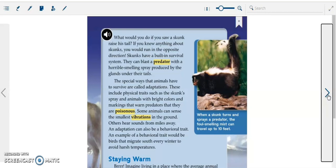These include physical traits such as the skunks' spray and animals with bright colors and markings that warn predators that they are poisonous. Some animals can sense the smallest vibrations in the ground. Others hear sounds from miles away. An adaptation can also be a behavioral trait. An example of a behavioral trait would be birds that migrate south every winter to avoid harsh temperatures.